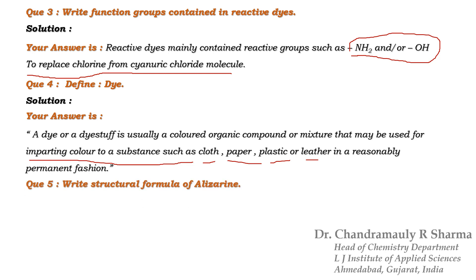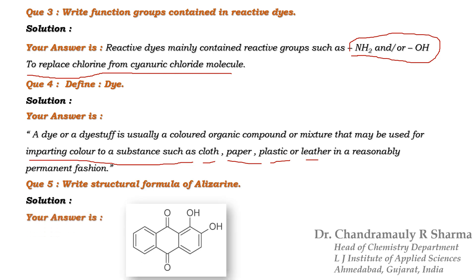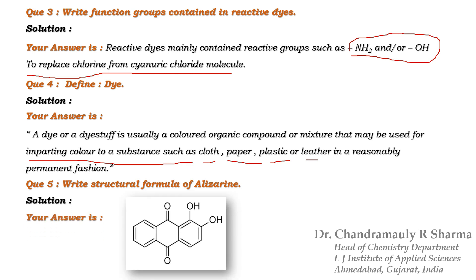Next question: Write the structural formula of alizarin. It is a very easy question, so the structure of alizarin is just given on your screen. Its structure contains an anthraquinone ring with a phenolic OH group.